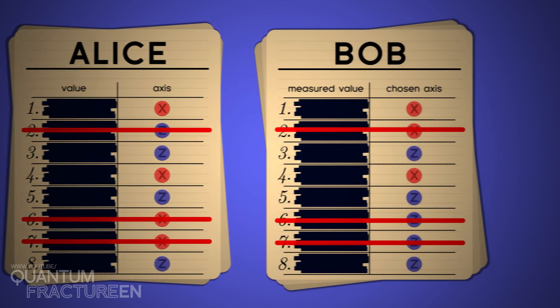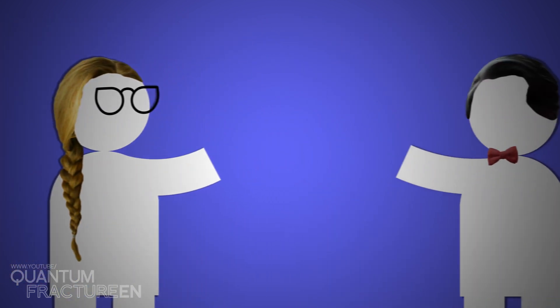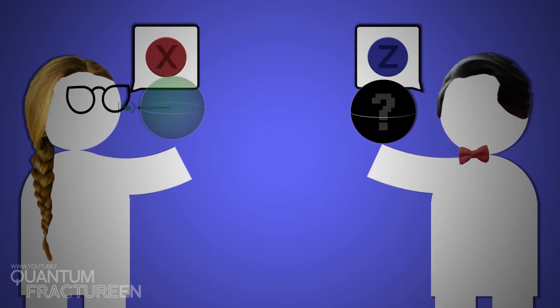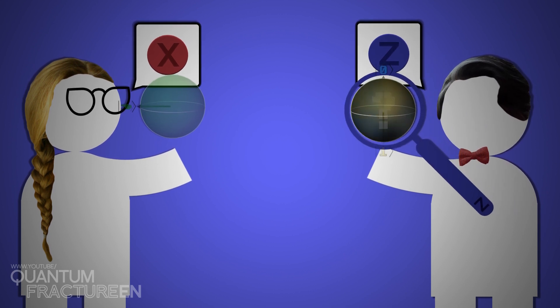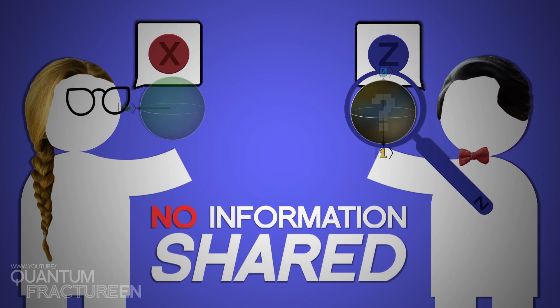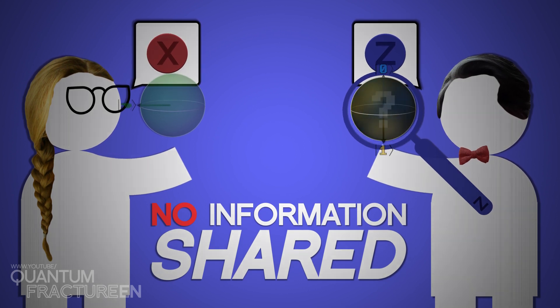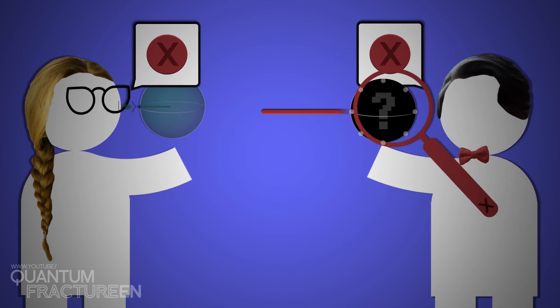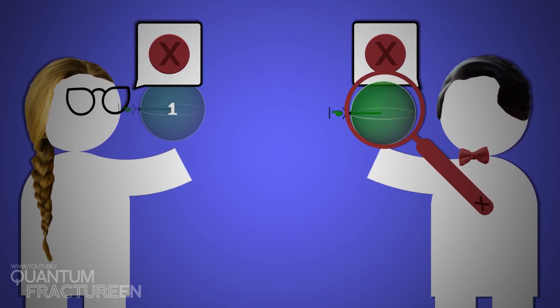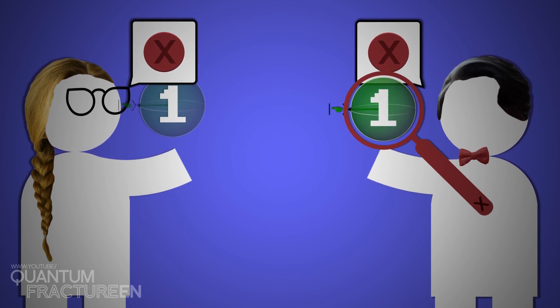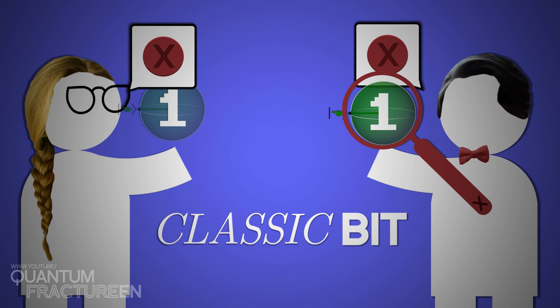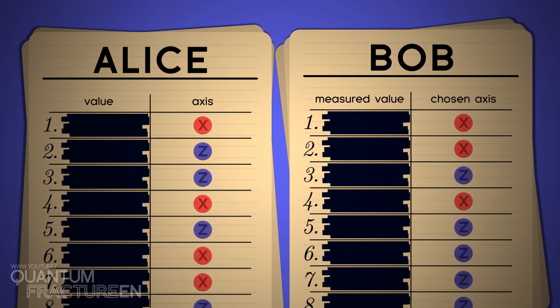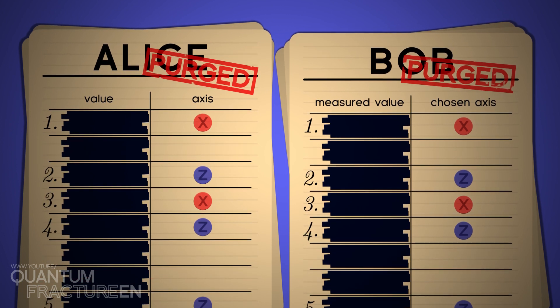Now Alice and Bob compare the two lists of axes and eliminate the cases where the axes don't match. They do this because in these cases, the results Bob measures are totally random. For instance, imagine Alice prepares a left state on axis x, but Bob goes and measures it on axis z. He'd randomly get a zero or one state. No information has been transmitted. However, if Bob has chosen the same axis as Alice in this case, x, he definitely would have measured a left state. When Alice and Bob choose the same axis, they always get the same result. They're exchanging a classic bit. Bob has a 50% chance of choosing the same axis as Alice, so the initial list of qubits will be reduced by about half.